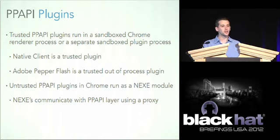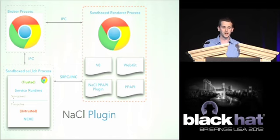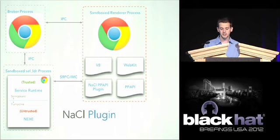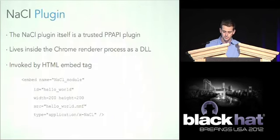The Native Client plug-in builds on top of the Pepper implementation. It lives in the right-hand sandbox renderer process alongside WebKit, V8, and the Pepper implementation — it's in process, just a regular DLL. There's nothing special about it — it gets loaded like any other DLL and works like any other Pepper plug-in would. It's compiled and pulled in by the Chrome browser.